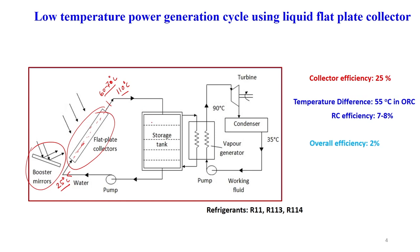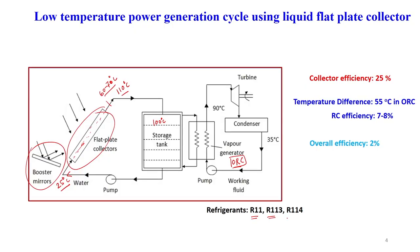But when we use a booster mirror, then its temperature goes up to something like 110 degrees Celsius. We can consider an ambient inlet temperature of maybe 25 degrees Celsius. It may happen that we can store the hot water at 100 degrees Celsius in an insulated tank before we expand it in the secondary fluid, because here we are using an organic Rankine cycle. Typically, refrigerants used include R11, R113, and R114, and either of these refrigerants can be used in this secondary cycle.